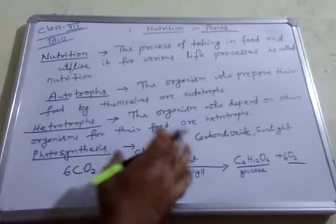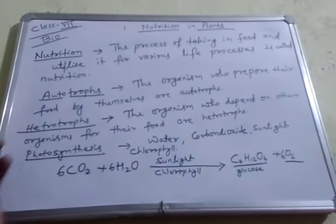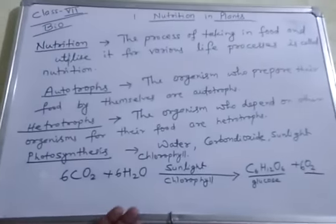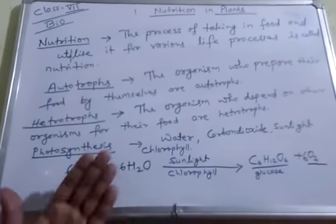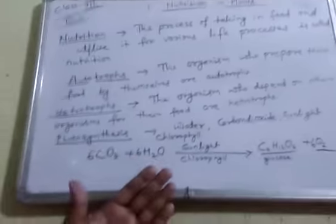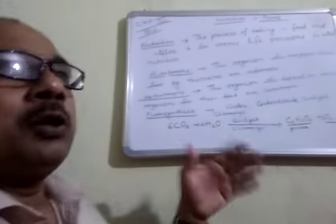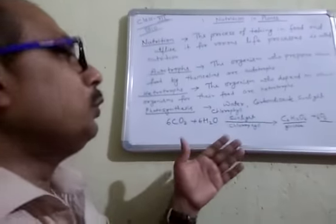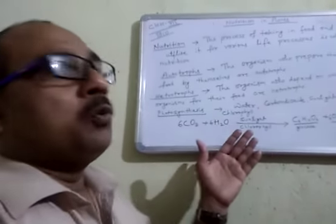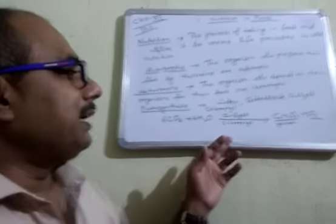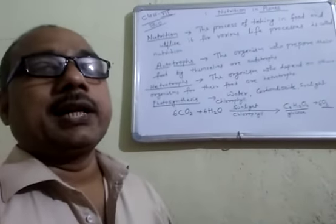تو یہ ہوا autotrophic mode of nutrition۔ باقی دوسرے جتنے living beings ہیں وہ سبھی کسی نہ کسی طرح سے plant پر depend ہیں — یا پھر جو other animals ہیں جو plant پر depend کرتے ہیں، یعنی بڑا animal چھوٹے animal کو کھاتا ہے — وہ heterotrophic mode of nutrition کہلاتا ہے۔ آج کے لئے اتنا ہی، next class میں ہم لوگ اور آگے دیکھیں گے۔